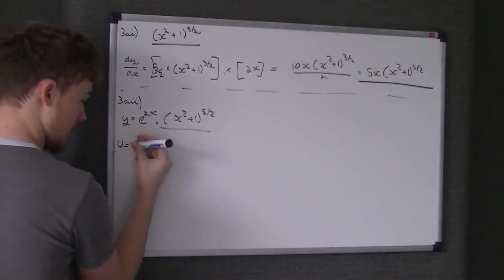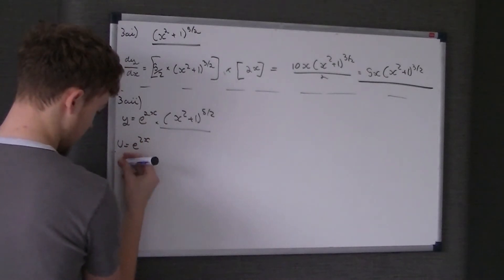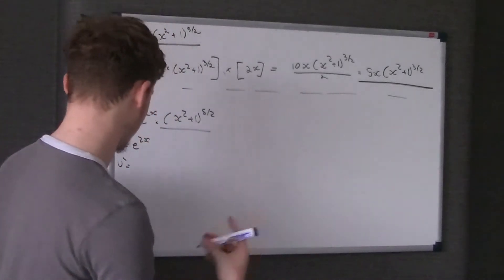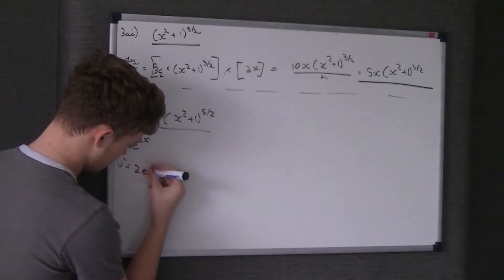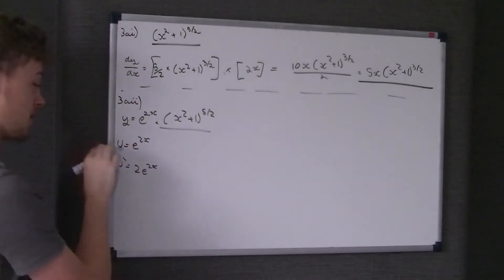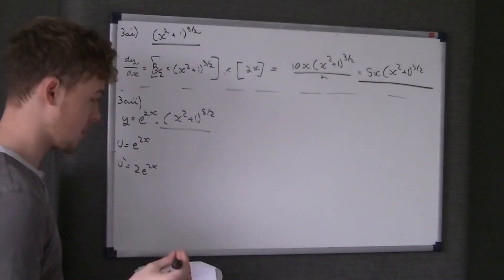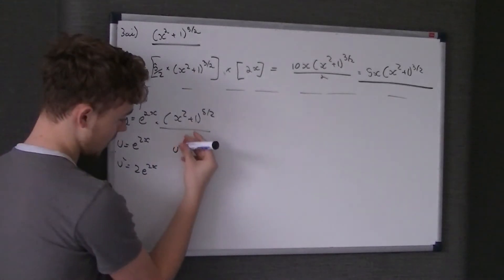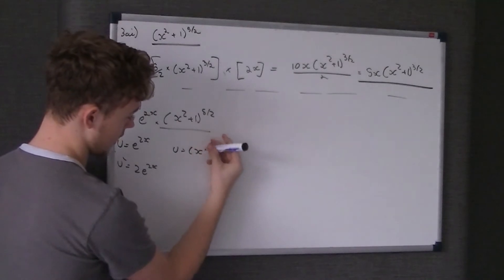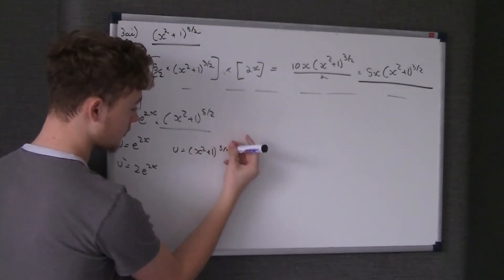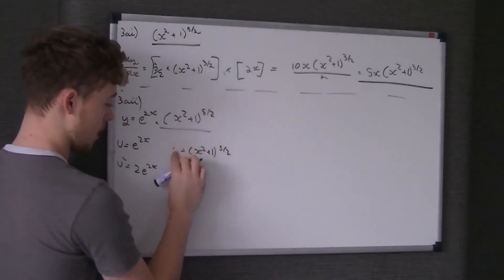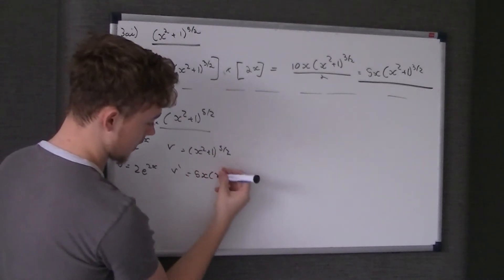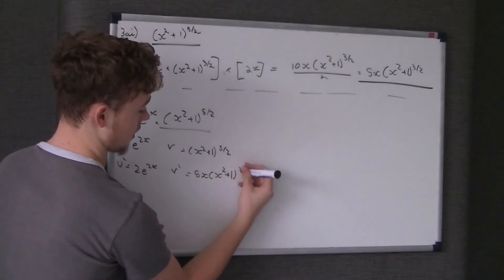u is e^(2x), and u' is 2e^(2x) because you differentiate the power and times that by the whole thing. v is (x² + 1)^(5/2). We worked out what v' was: 5x(x² + 1)^(3/2).